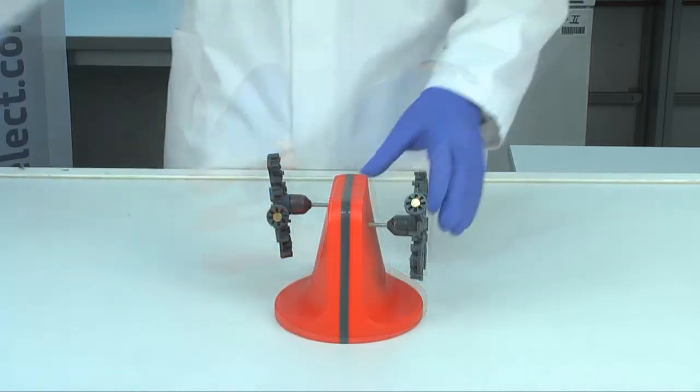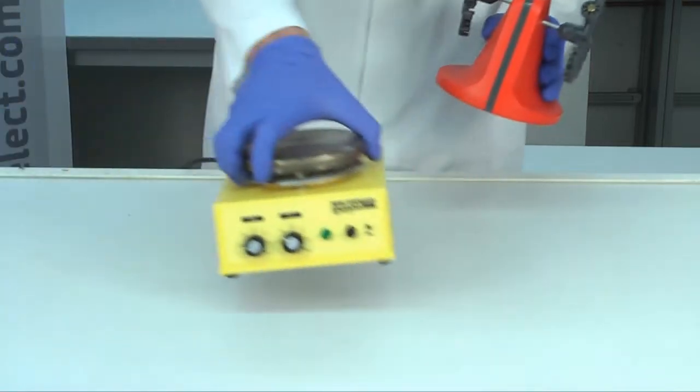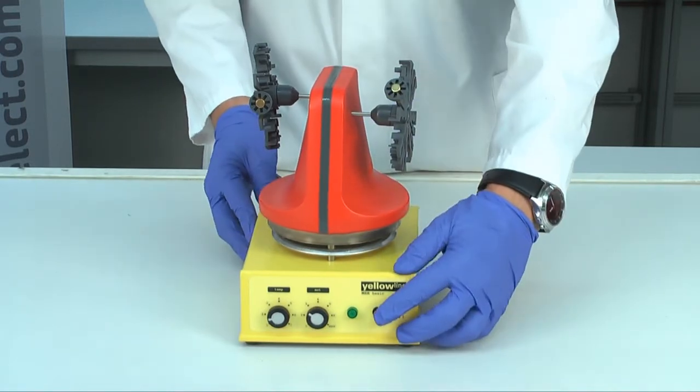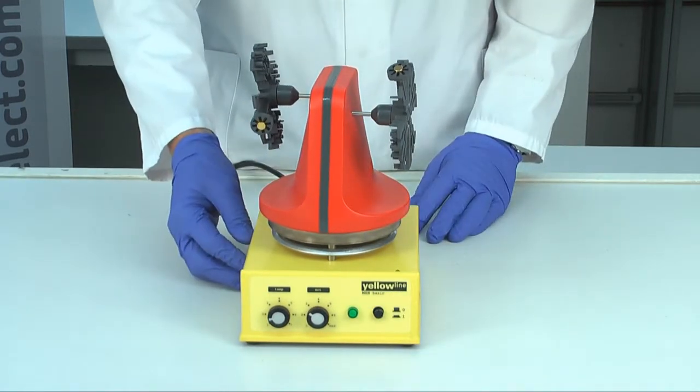For mixing, just place it on a magnetic stirrer. Adjust the mixing speed with a magnetic stirrer.